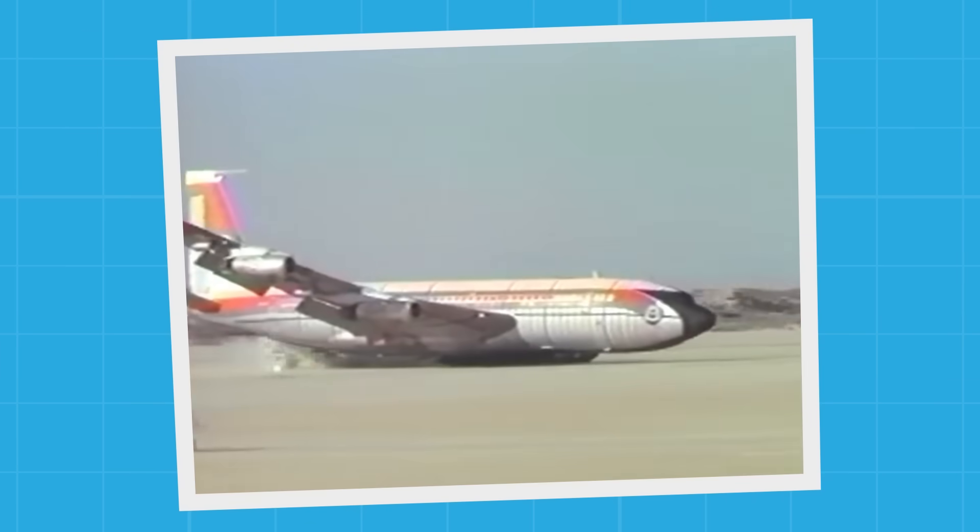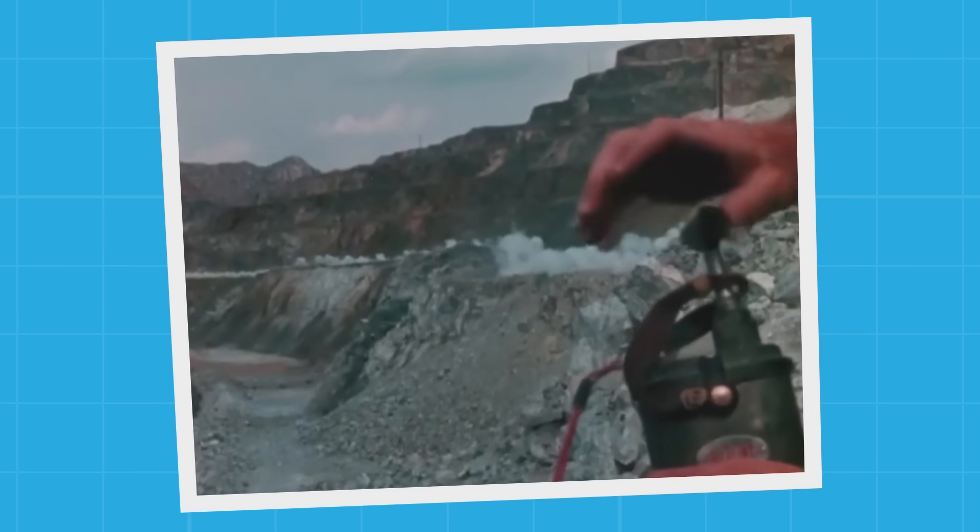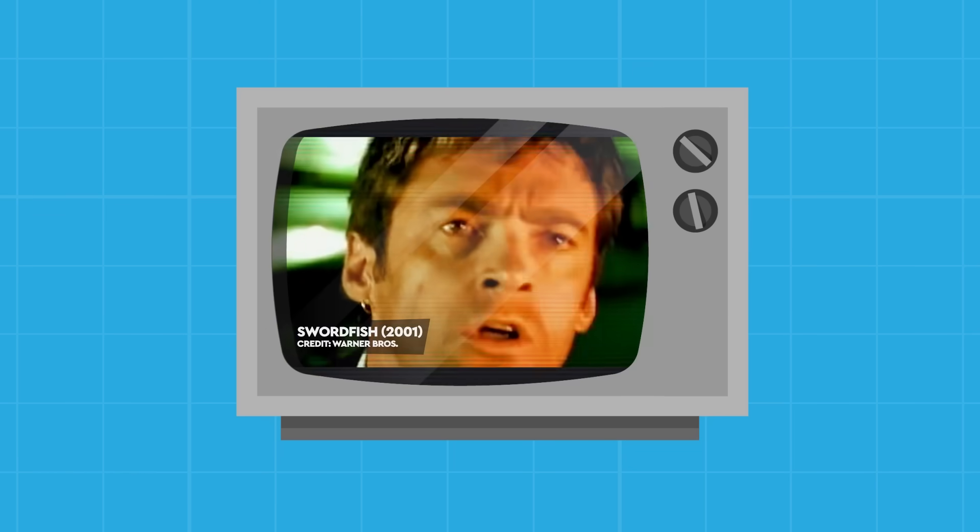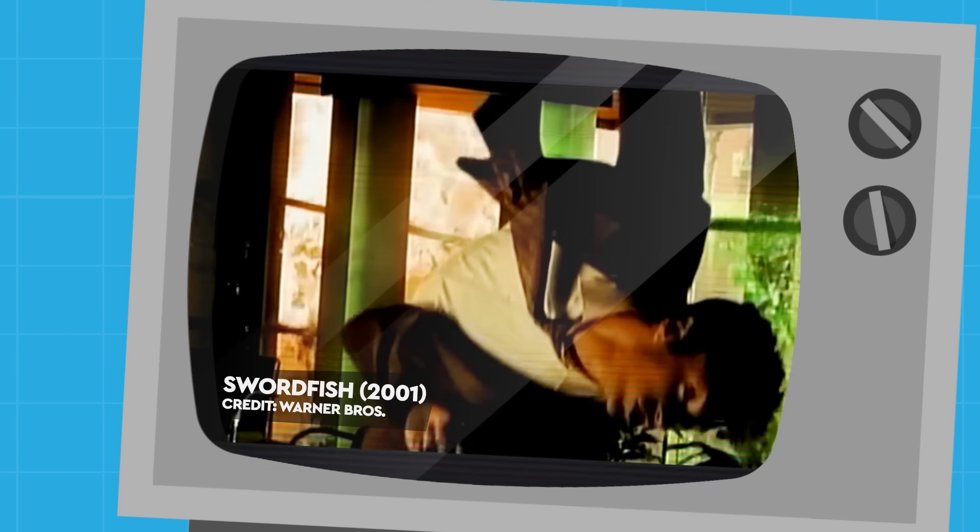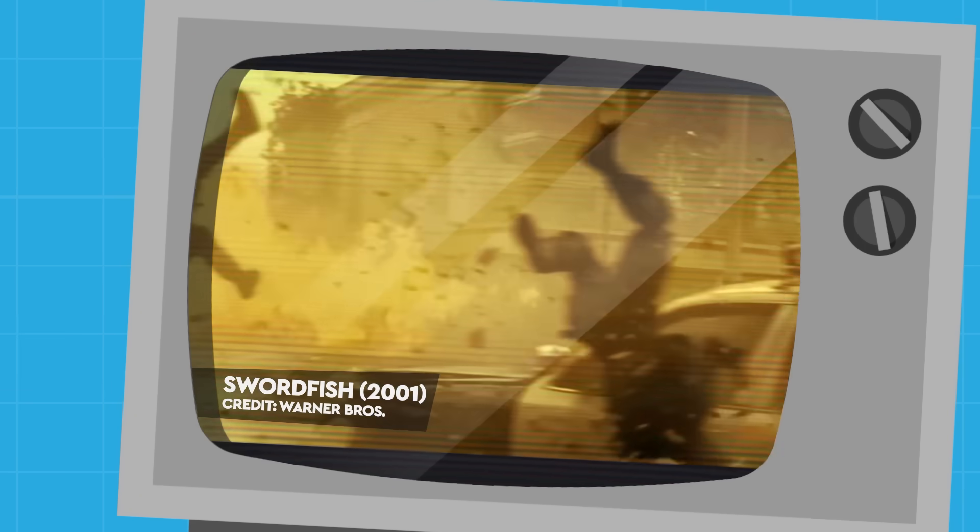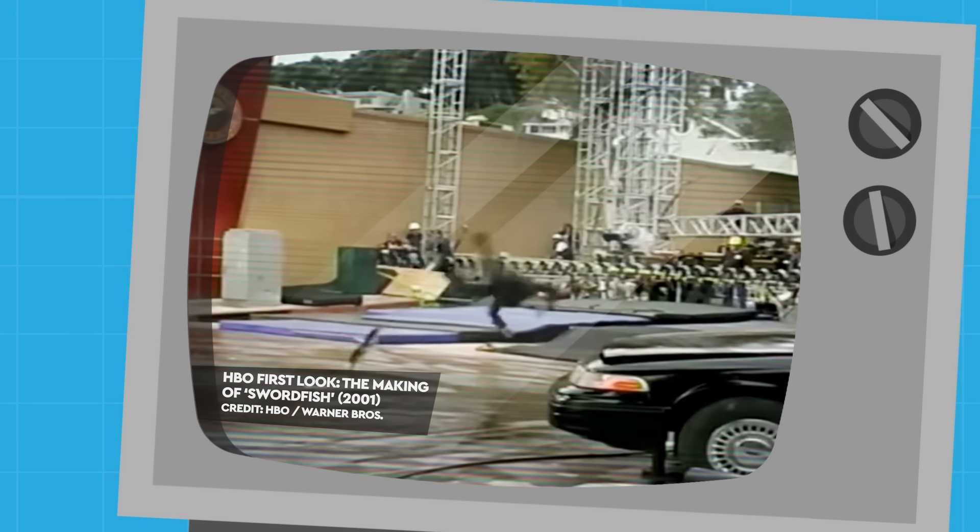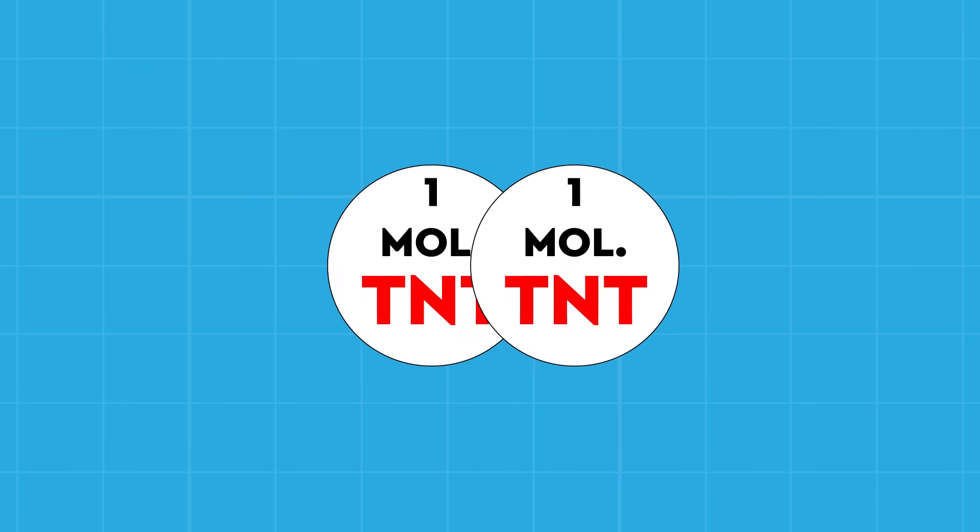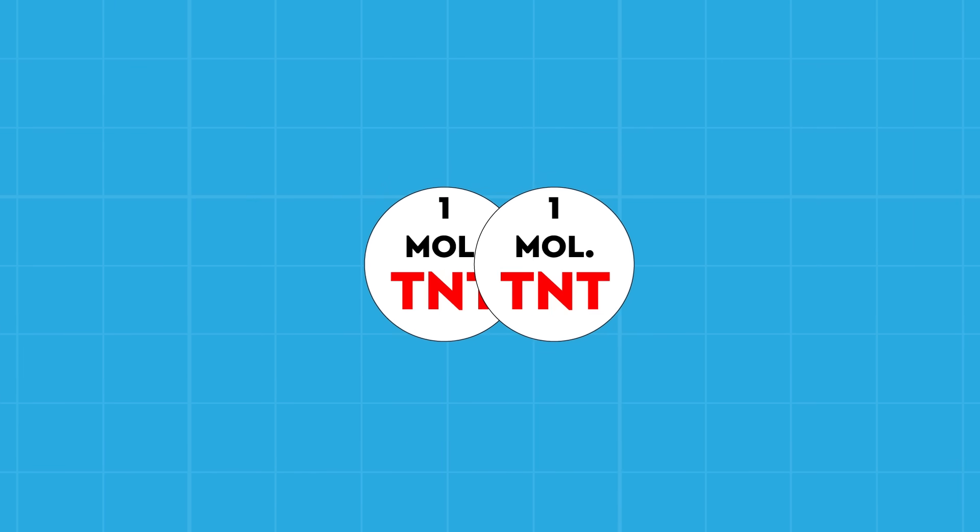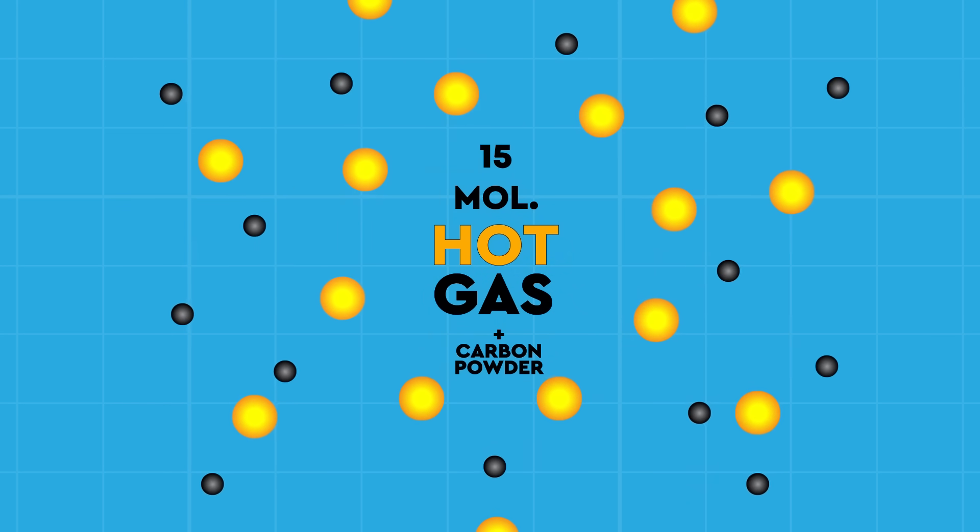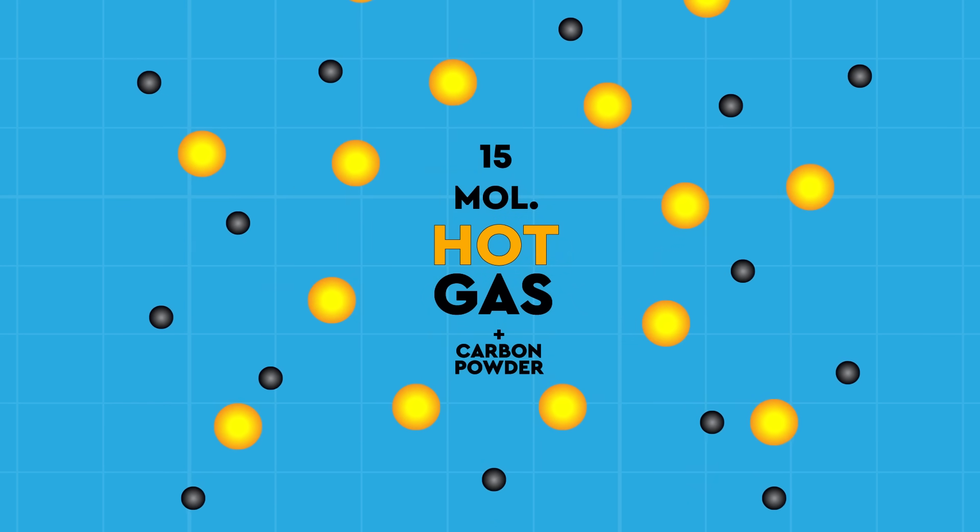These explosions occur either in the form of accidents involving heavy machinery, volatile chemicals, etc., or actual explosives being used intentionally to blow things up. In the movies and on television, explosions are frequently enormous, fiery affairs that blow unfortunate baddies or heroes clear into the air. And while those sorts of explosions aren't exactly fake, they're not exactly realistic either.